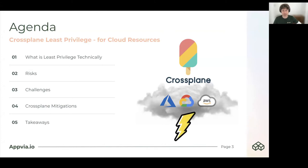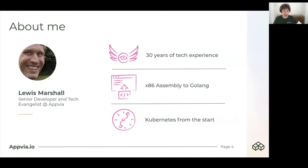A little bit about myself. My name's Lewis Marshall. I'm a senior developer and tech evangelist at Appvia. I have 30 years of tech experience. I started my career with 88th Assembler, and nowadays I code in Golang, and I've been lucky enough to be involved with Appvia and the Kubernetes project right from the start.